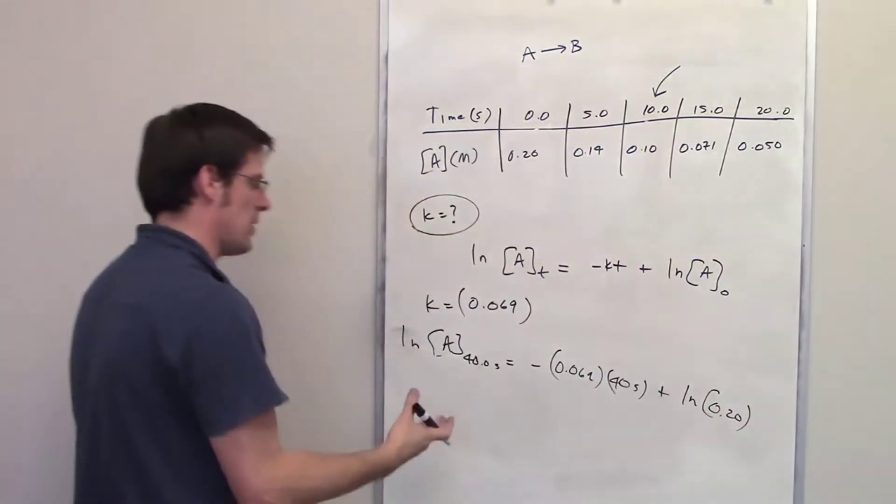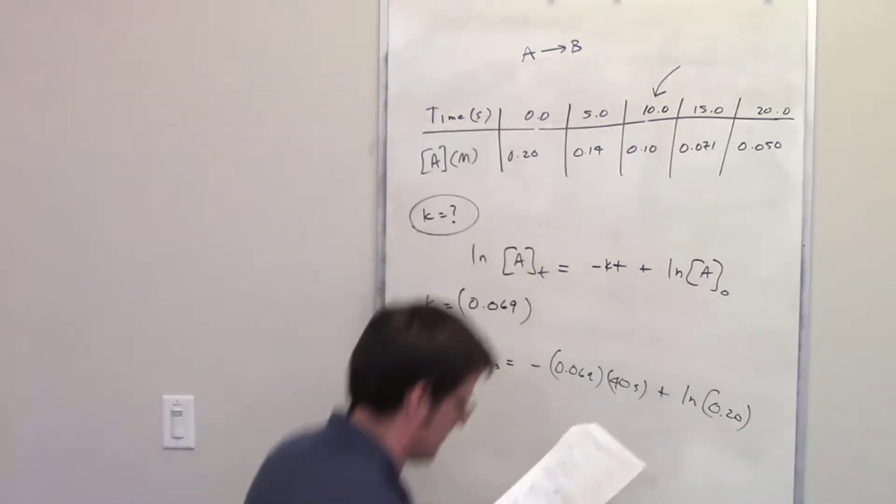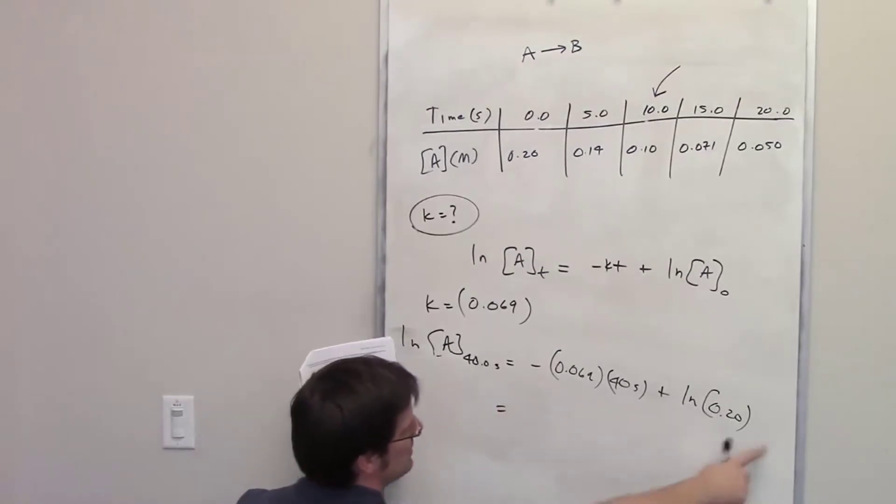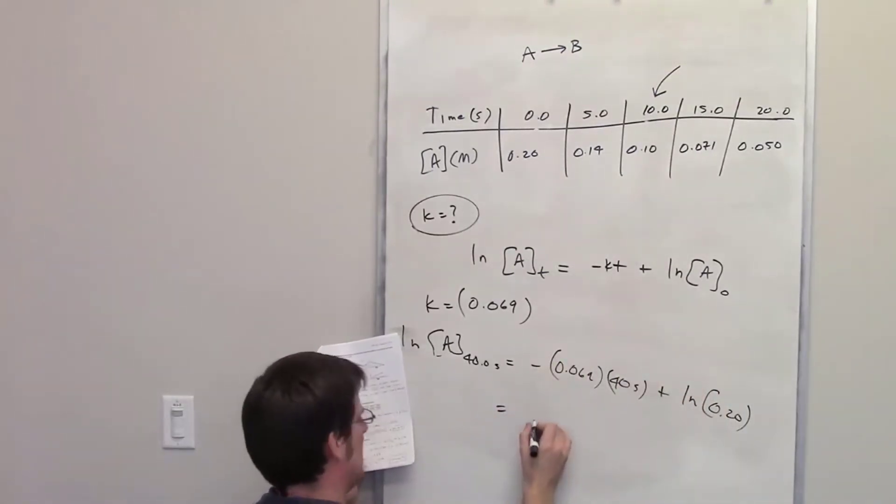So I can go ahead and throw that into my calculator. When I do that, the ln of 0.2, I did that. All of this junk here to the right, I ended up getting all of that coming out to negative 4.37.